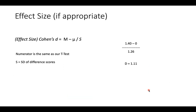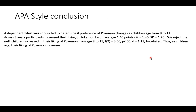We're significant, so we calculate Cohen's d: m minus mu over standard deviation — 1.4 divided by 1.26 — gives d = 1.11, another large effect. APA-style conclusion: a dependent t-test was conducted to determine if preference for Pokemon changes as children age from 8 to 11. Participants increased their liking by on average 1.4 points (M = 1.4, SD = 1.26). t(9) = 3.50, p < .05, d = 1.11, two-tailed. Thus, as children age, their liking of Pokemon increases.